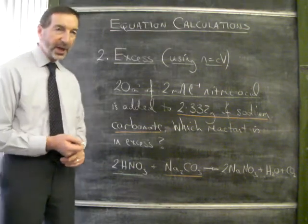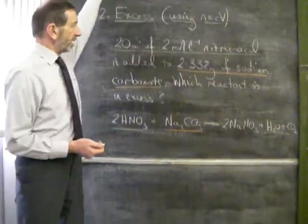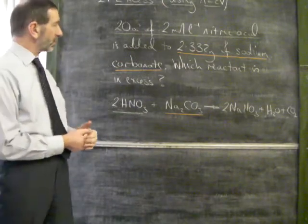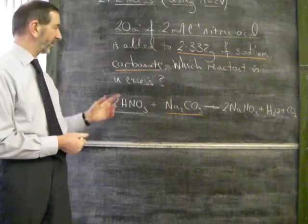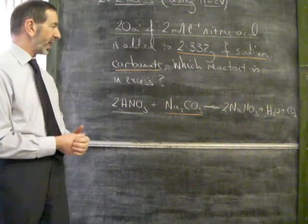Here's another calculation involving excess. This time it says, 20 cubic centimeters of 2 moles per liter nitric acid is added to 2.332 grams of sodium carbonate. Which reactant is in excess?